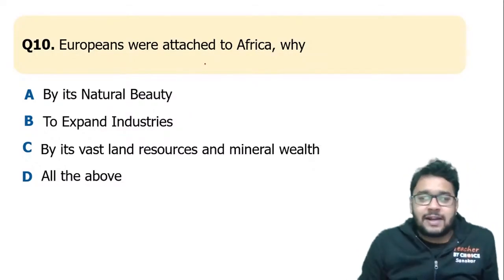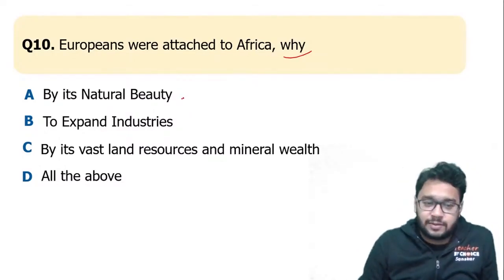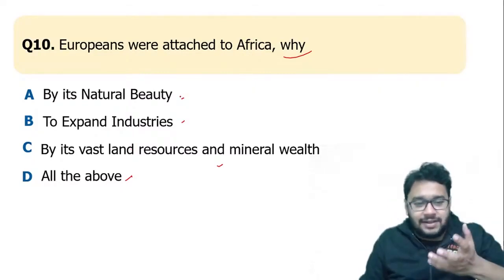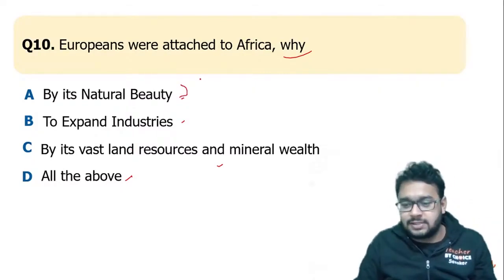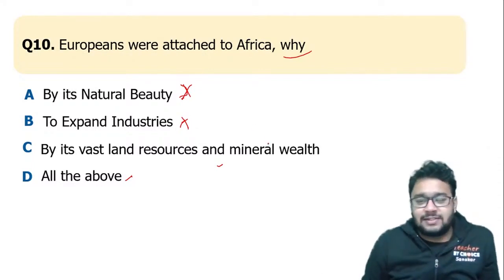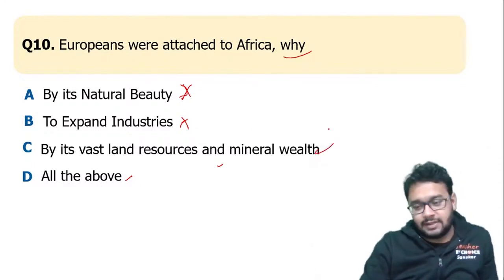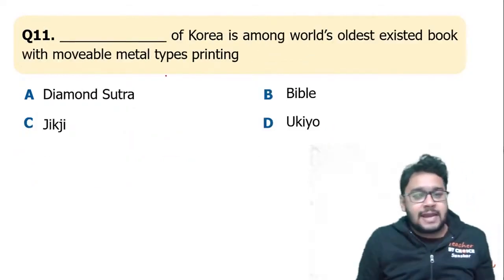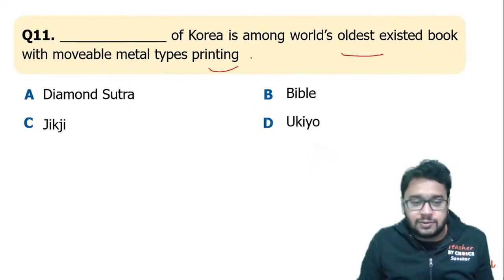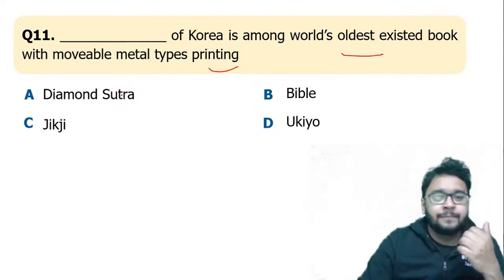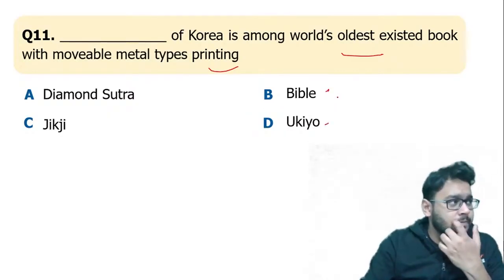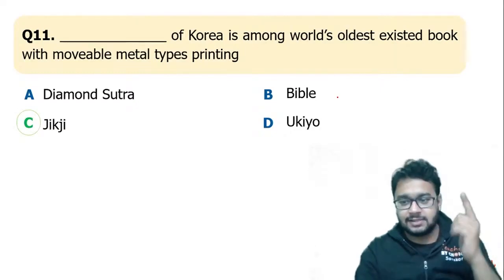The correct answer for the South Africa colonialism question is four — natural beauty does not attract colonialism. Colonialism happened because of vast land resources and mineral wealth — gold and diamond mines. Regarding print culture: the Jikji of Korea is among the world's oldest existing books with movable metal type printing. The Diamond Sutra was from China and the Bible from Europe. Jikji is from North Korea.